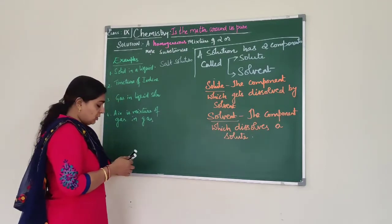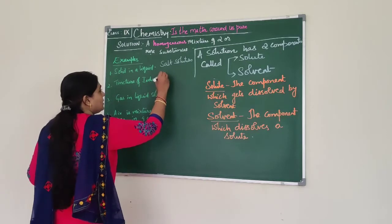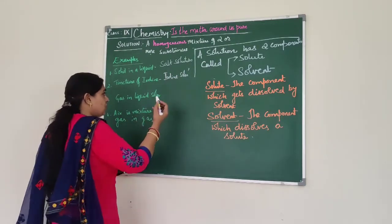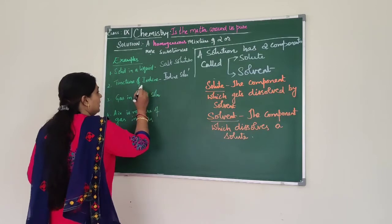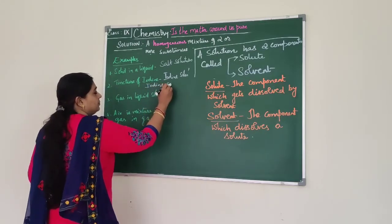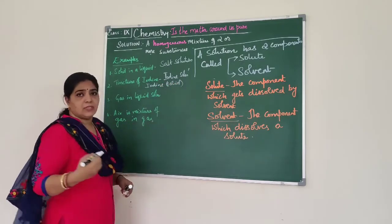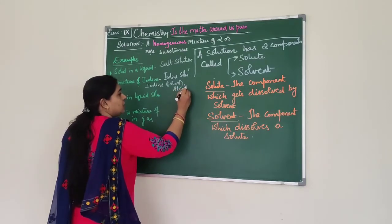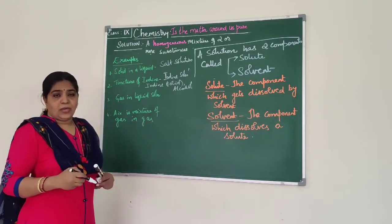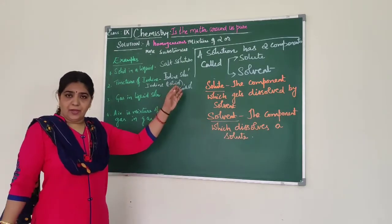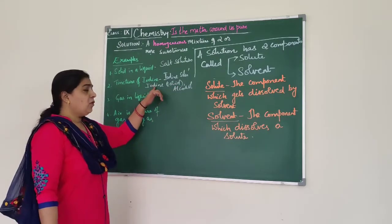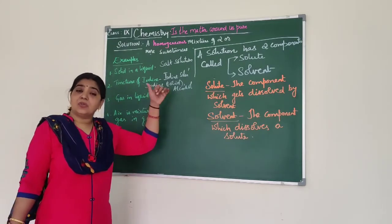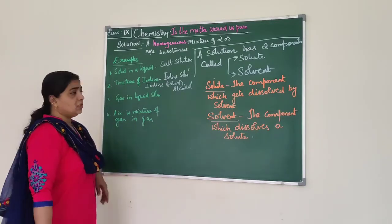Another example is tincture of iodine. What is tincture of iodine? It is the iodine solution — iodine is a solid which is the solute, and it gets dissolved by the solvent, which is alcohol. So tincture of iodine is a solution of iodine in alcohol — iodine is the solute and alcohol is the solvent.